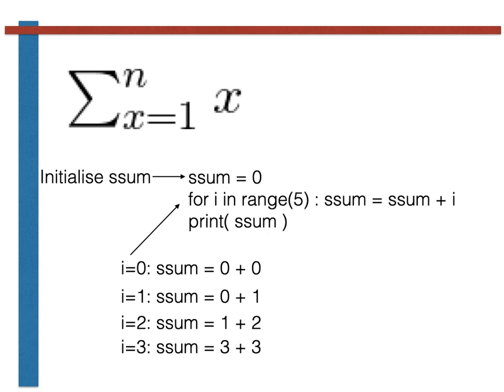On the fourth pass through the loop, we have i equals 3. We thus set ssum equal to its current value, which is 3, and we add to that i, which is also 3. So by the end of this pass through the loop, the value of ssum is 6.